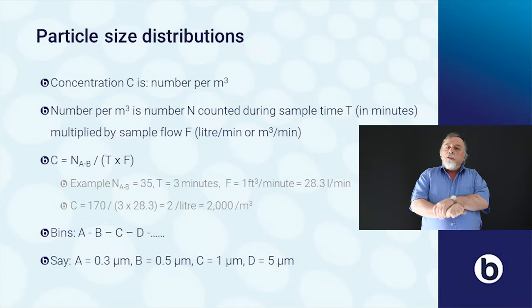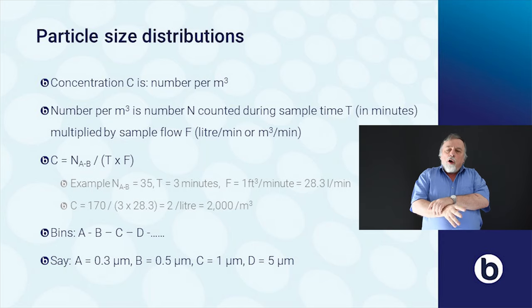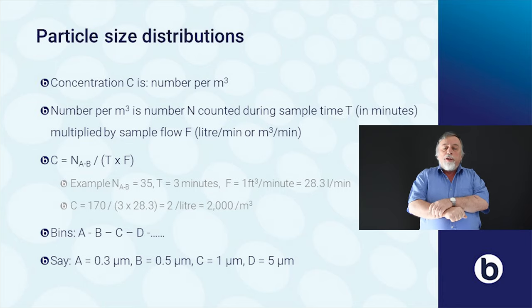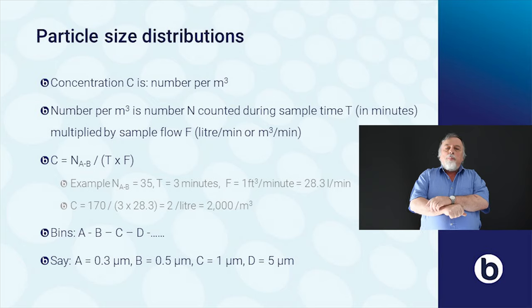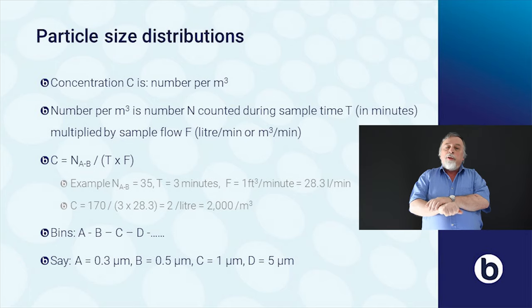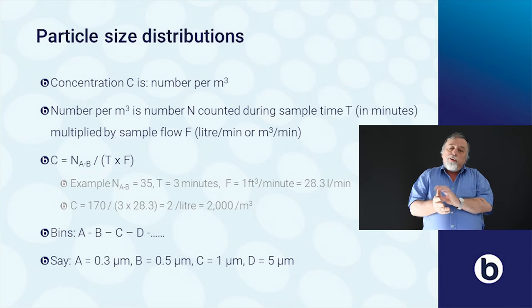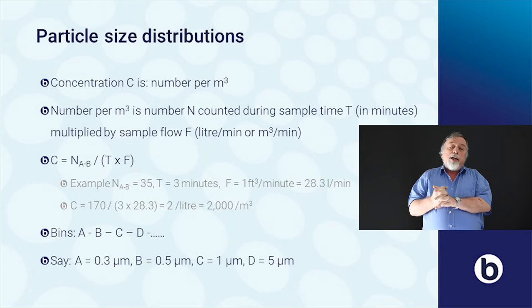With a particle counter we measure the concentration, which is the number of particles per cubic meter. Often these counters measure per cubic foot, but we calculate it into cubic meters to be able to compare measurement values with ISO standard limits. The number of particles per cubic meter is found by taking your sample time in minutes and multiplying this by the sample flow in liters per minute or cubic meters per minute.